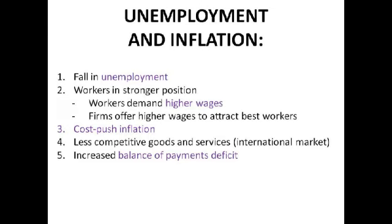We're now going to look at the link between unemployment and inflation and why they are so hard to get both at the level you want — they lead to a trade-off. If unemployment falls, workers are in a stronger position because firms have less choice. Workers demand higher wages and firms must offer them to attract the best staff. This leads to cost-push inflation because wages are a major cost of production, so when costs rise, prices rise — that is inflation, and a wage-price spiral can occur.